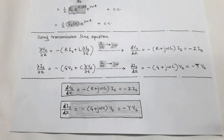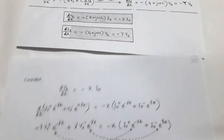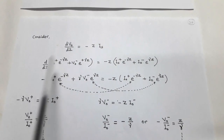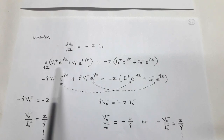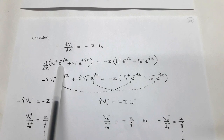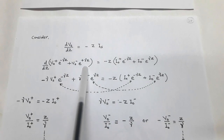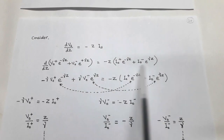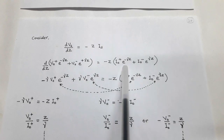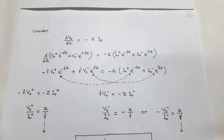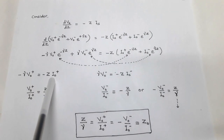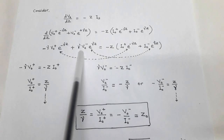From here we have the transmission line equations in complex form: dV_s/dz = −Z·I_s and dI_s/dz = −Y·V_s. Taking the voltage equation dV_s/dz = −Z·I_s, the solution for V_s is V₀⁺·e^(−γz) + V₀⁻·e^(+γz), where the negative exponent indicates forward propagation and the positive exponent indicates backward propagation. Similarly, I_s = I₀⁺·e^(−γz) + I₀⁻·e^(+γz).